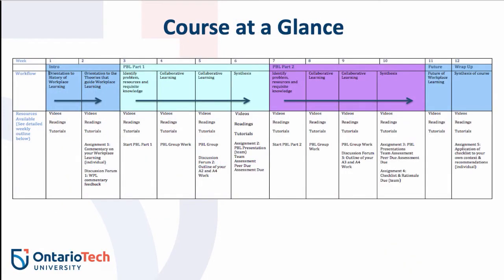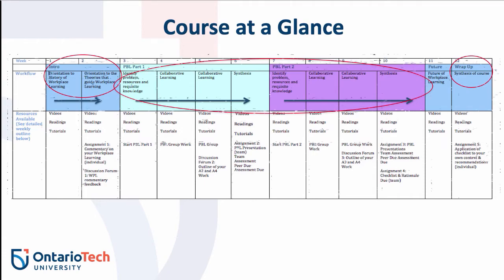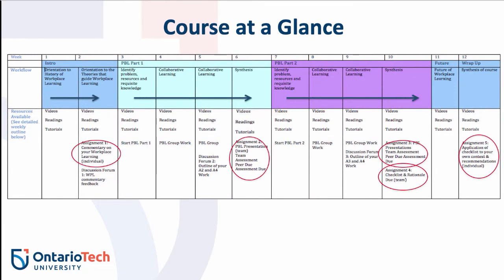The final component is working on your problem-based learning. This slide illustrates the various components and general workflow of the course. The 12 weeks begin with an intro and end with a wrap-up; in between, the majority of weeks are spent working on problems. There are also five assignments and three discussion forums, with the first one next week, which will really get us into the issues surrounding workplace learning.